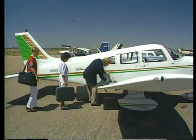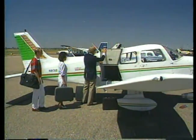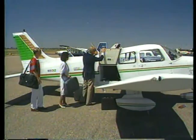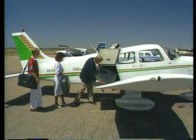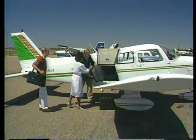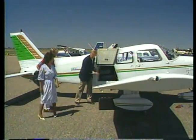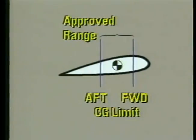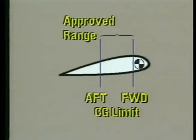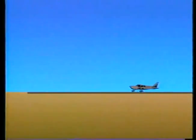Since pitch stability depends upon the difference in location between the center of gravity and the center of lift, the CG's location plays an important role in how an airplane handles. By paying close attention to where and how much fuel, cargo, and people you load on an airplane, you can ensure that the center of gravity will remain within the limits set by the manufacturer. If too much weight is loaded in the front section, the CG will be forward of the limit, making the airplane nose heavy. There may not be enough elevator force available to rotate the airplane for takeoff or to raise the nose during the landing flare.